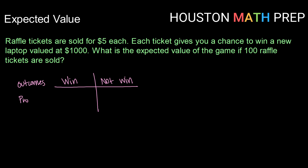Let's think about the probability of each of those. If there are 100 raffle tickets sold and you bought one of them, then your chances of winning are 1 out of 100 — your raffle ticket has a 1 in 100 chance of being chosen. You have a 99 out of 100, or 99%, chance of not winning, since there are 99 other tickets that could be chosen other than yours.